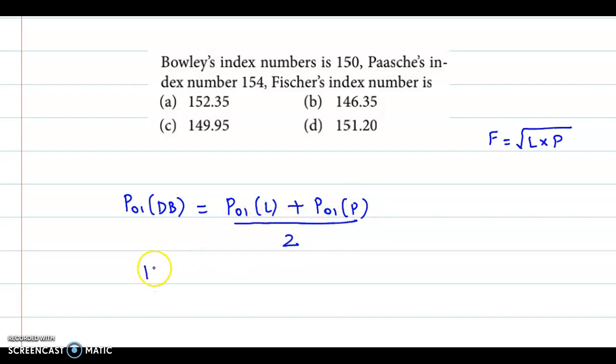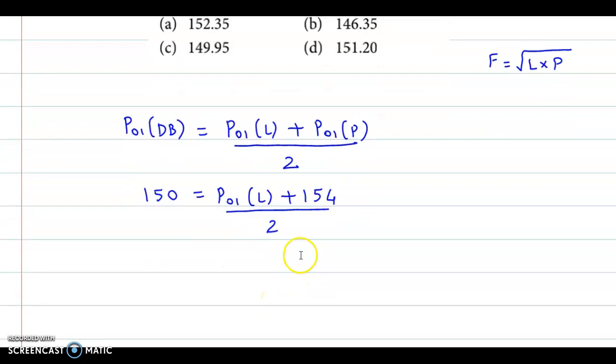Bowley's index number is 150. So 150 is equal to Laspeyres index is missing. Paasche's index is 154. So here we go, plus 154 divided by 2.